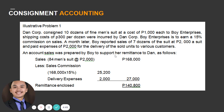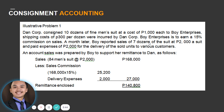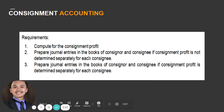An account sales was prepared by Boy to support the remittance to Dan. Sales: 84 men's suits (7 dozens × 12) at $2,000 each equals $168,000. Less sales commission of 15%: $168,000 × 15% = $25,200. Less delivery expenses of $2,000. Total expenses: $27,200. Therefore, the remittance from Boy Enterprises to Dan Corporation totals $140,800.